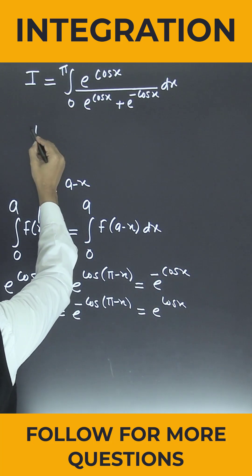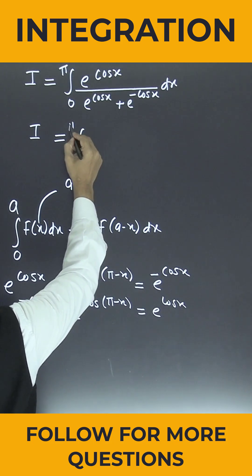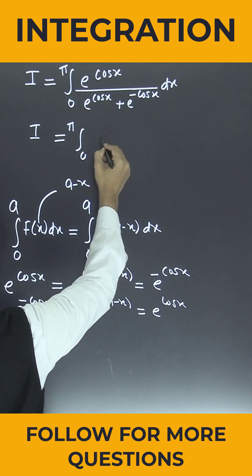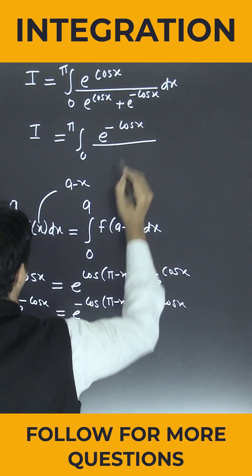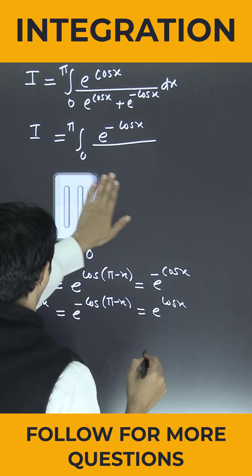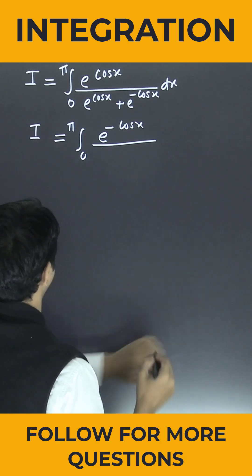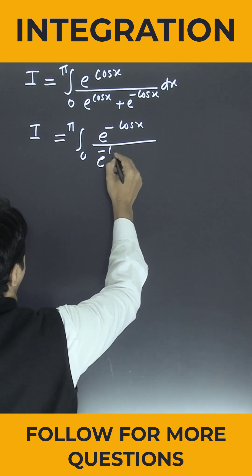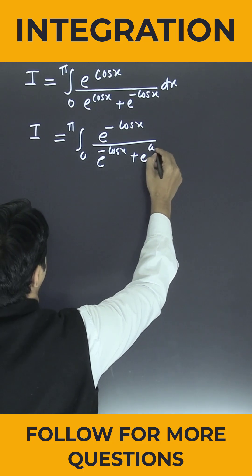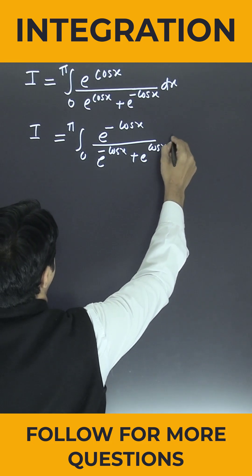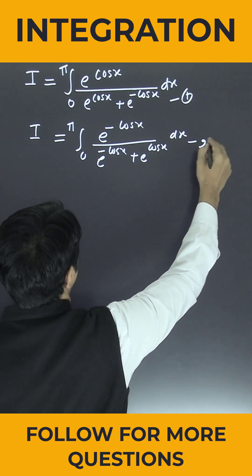So capital I is nothing but integration from 0 to π of e^(-cos x) divided by e^(-cos x) plus e^(cos x) into dx. This is equation number 2, and the original is equation number 1.